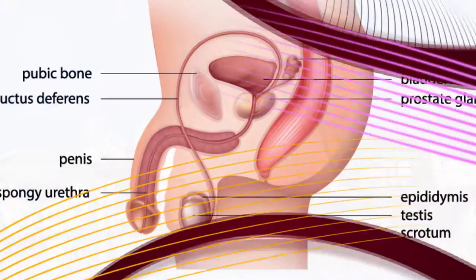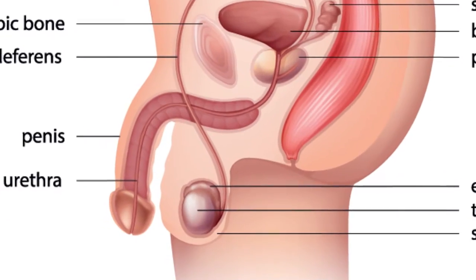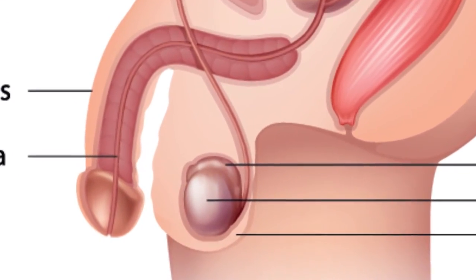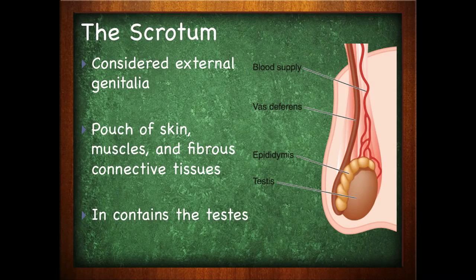The scrotum is considered external genitalia. It is a pouch of skin, muscles, and fibrous connective tissue. It contains the testes, which is what we're going to focus on right here. We're going to talk more about the scrotum later. So we have the scrotum, which is that pouch of skin, muscle, and connective tissue. Within the scrotum are the testes.